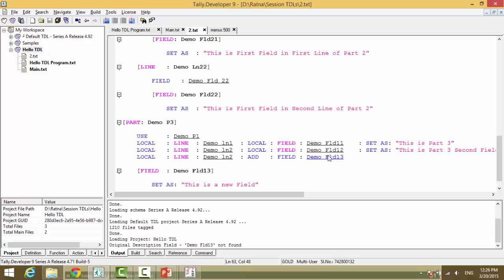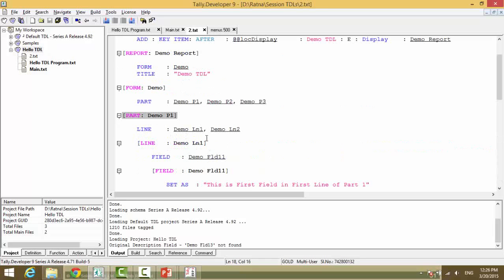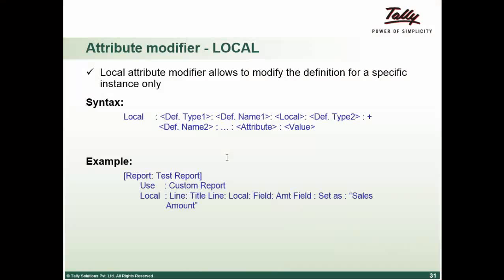But to this line we have added a new field. But you notice this, it is just changing for this part and not the previous part. So this is the functionality of the local. That it will only change the attribute behaviors for the definition for that particular definition. So use and local most of the time goes hand in hand, as in when required. Local is used to change the current definition type behavior.